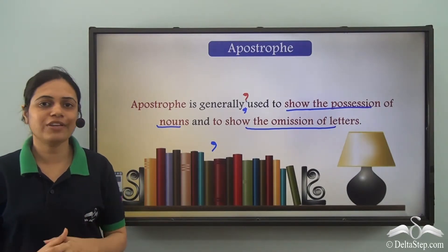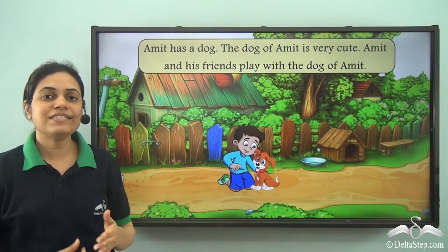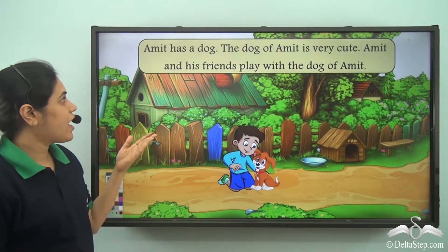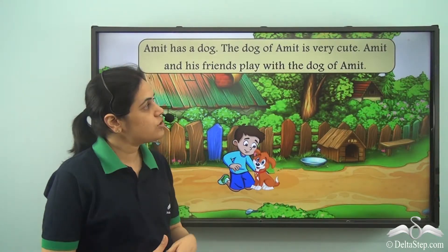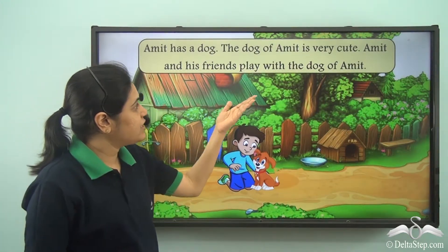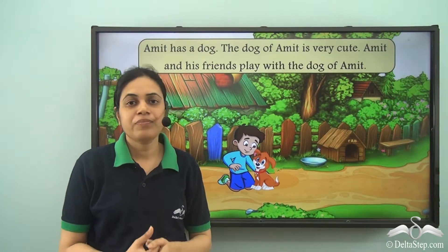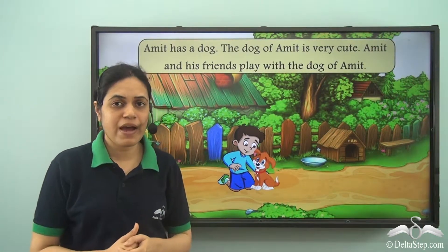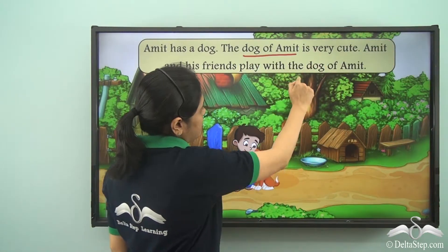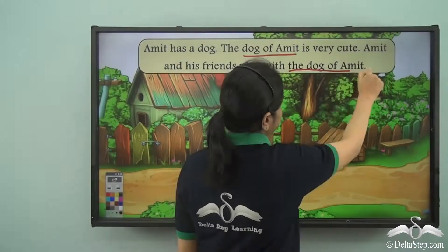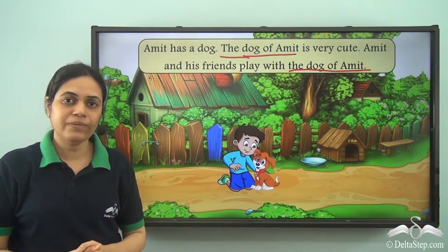Let us see how we can use apostrophe. Have a look at this interesting paragraph: 'Amit has a dog. The dog of Amit is very cute. Amit and his friends play with the dog of Amit.' While reading this paragraph, the phrase 'the dog of Amit' is being repeated again and again.